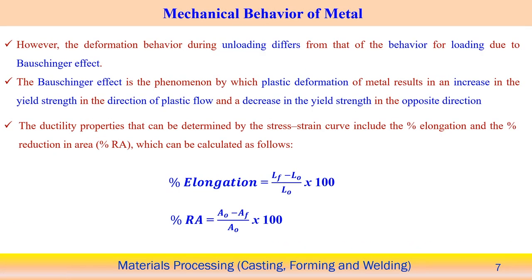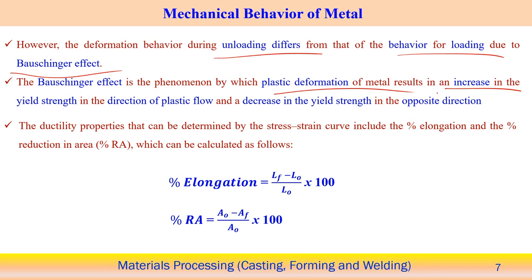The deformation behavior during unloading differs from the behavior during loading due to the Bauschinger effect. It means that here we have applied tensile testing and reached the yielding point. But after reaching the yield point in tensile testing, if you then perform compressive testing, the yield point will occur at a different point. Even with further application of compressive load and tensile load, the yield points can be different. This type of behavior is known as the Bauschinger effect — yield point in tension and yield point in compression are different. Increased plastic deformation of the metal results in increase of yield strength in the direction of plastic flow, but decrease in yield strength in the opposite direction.